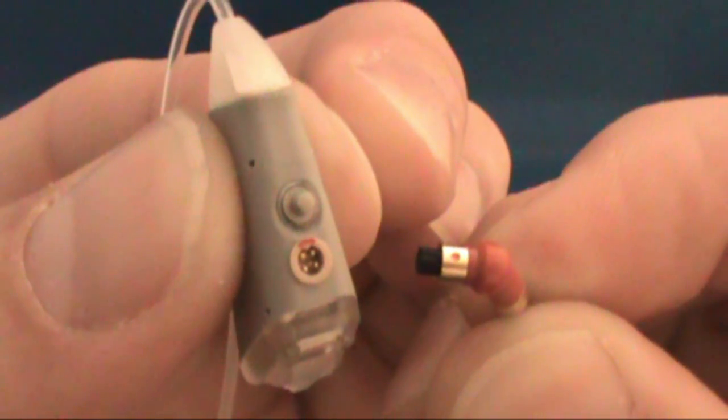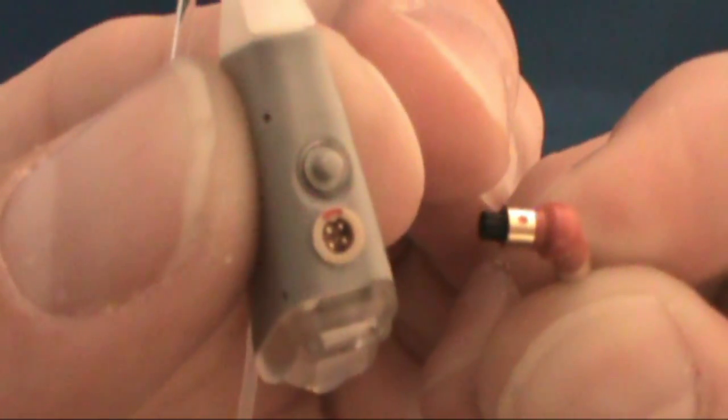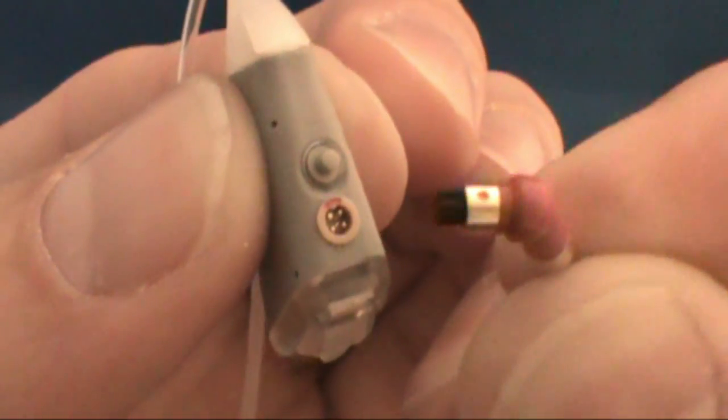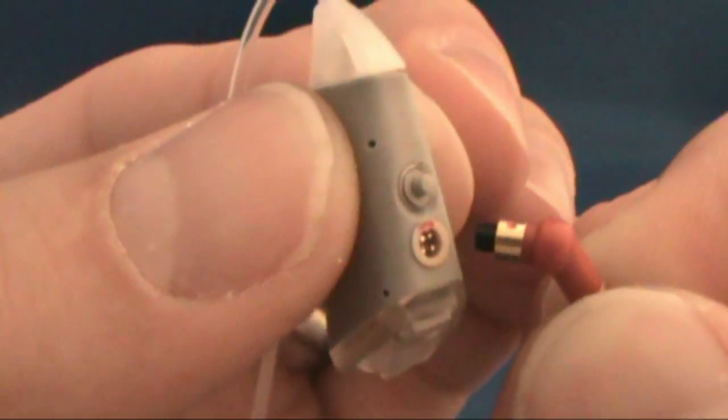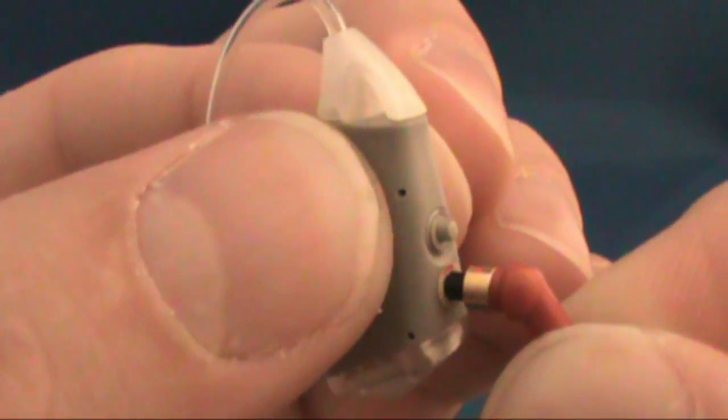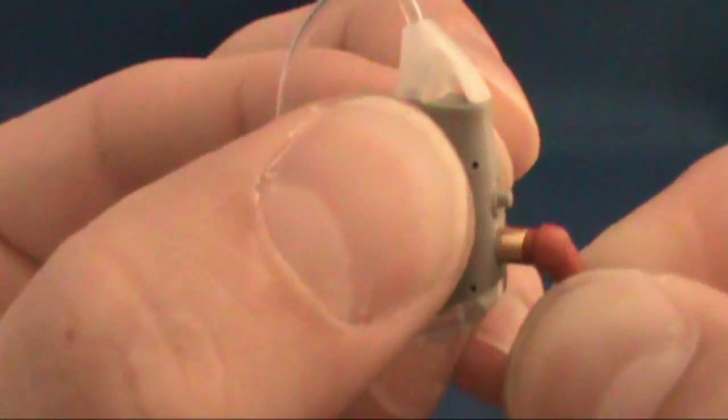Notice the red dot on the programming socket. Now notice the red dot on the programming cable. Lining these dots up aids in the insertion of the programming cable into the hearing aid. Gently push the cable into the socket.